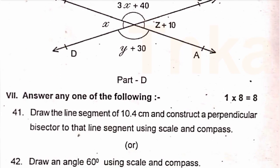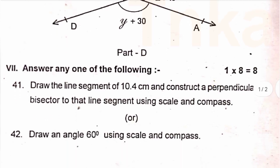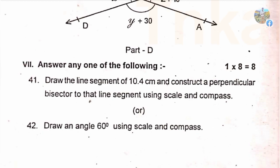Part D — Roman numeral 7, answer any one of the following, 8 marks each with one internal choice. Question 41: draw a line segment of 10.4 cm and construct a perpendicular bisector to that line segment using scale and compass. Or, Question 42: draw an angle of 60 degrees using scale and compass. Please practice this question paper, and if you have any doubts, post them in the comment section. If you have any exam question papers, upload them. Thank you for your support and thanks for watching.